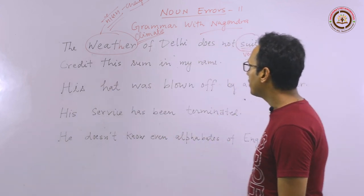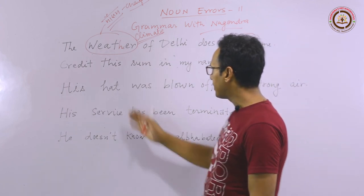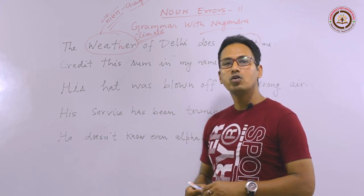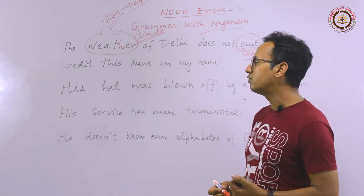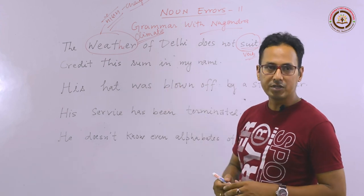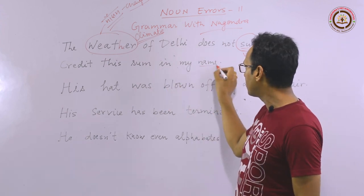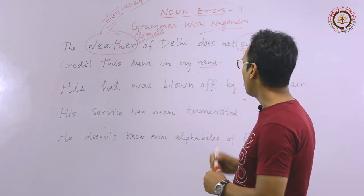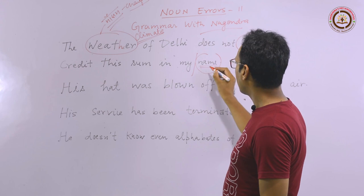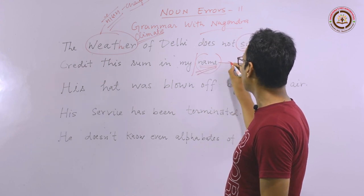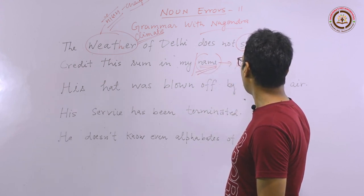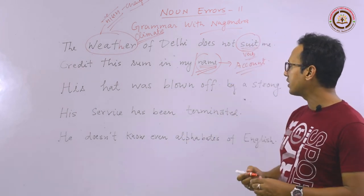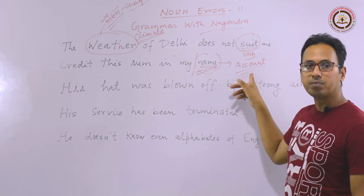The second important sentence is: 'Credit this sum in my name.' We say 'paisa mere naam pe jama kara do' from our conversational habit, but money is never deposited in a name. The error is here — it should be 'Credit this sum in my account.' Money always goes into an account, so mark the error on 'name' and replace it with 'account.'